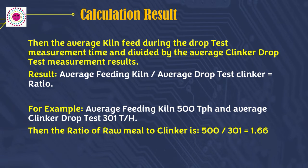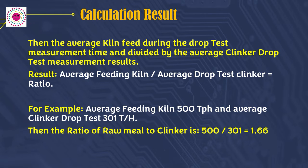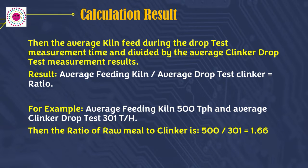Result: average kiln feed ÷ average drop test clinker = ratio. For example, average kiln feed is 500 tons per hour and average clinker drop test is 301 tons per hour. Then the ratio of raw meal to clinker = 500 ÷ 301 = 1.66.